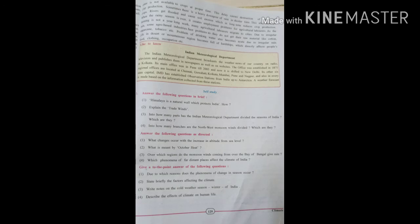This delay causes destruction of seeds and crop production. Sometimes there is heavy downpour of rain in a short time, which also destroys the crops. Rivers get flooded and cause soil erosion, which in the long term reduces crop production. When the rainy season is over, it creates employment problems for agricultural farmers, so they move toward the city for jobs. Many agricultural laborers migrate to the cities. Due to irregular rain, some agro-based industries face problems as they do not get their raw materials like cotton, sugarcane, tobacco, etc. Problem of drinking water also becomes acute. Life in desert and mountainous regions becomes full of hardship.